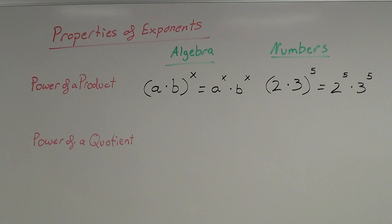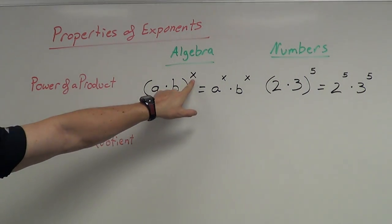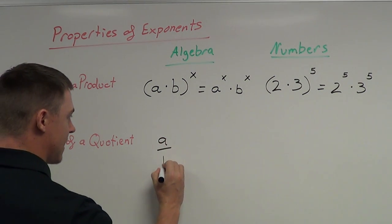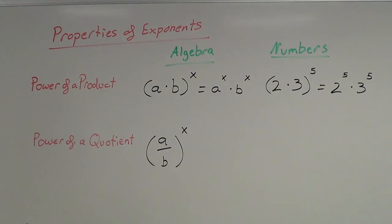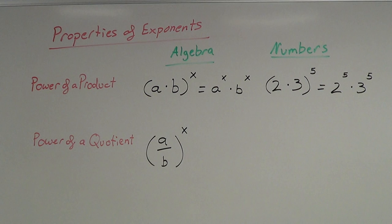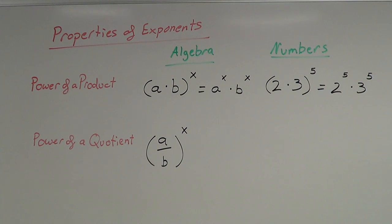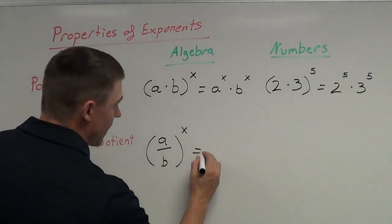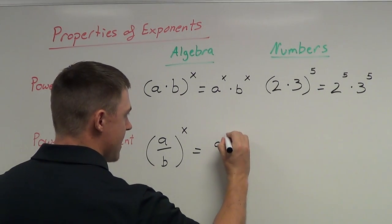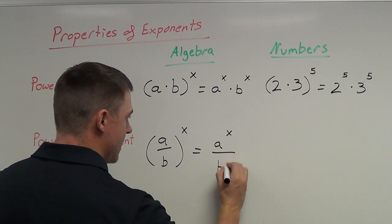Next, I'm going to do the power of a quotient. As you can imagine, if we're doing the power of a product, this one is going to be the power of a quotient — so I'm going to divide inside my parentheses and the exponent is on the outside. Power of a quotient is very similar to the power of a product. I'm going to take that exponent and apply it to each one of my terms inside — take that x and apply it to the a, take that x and apply it to the b. So this is going to be a to the x power over b to the x power.